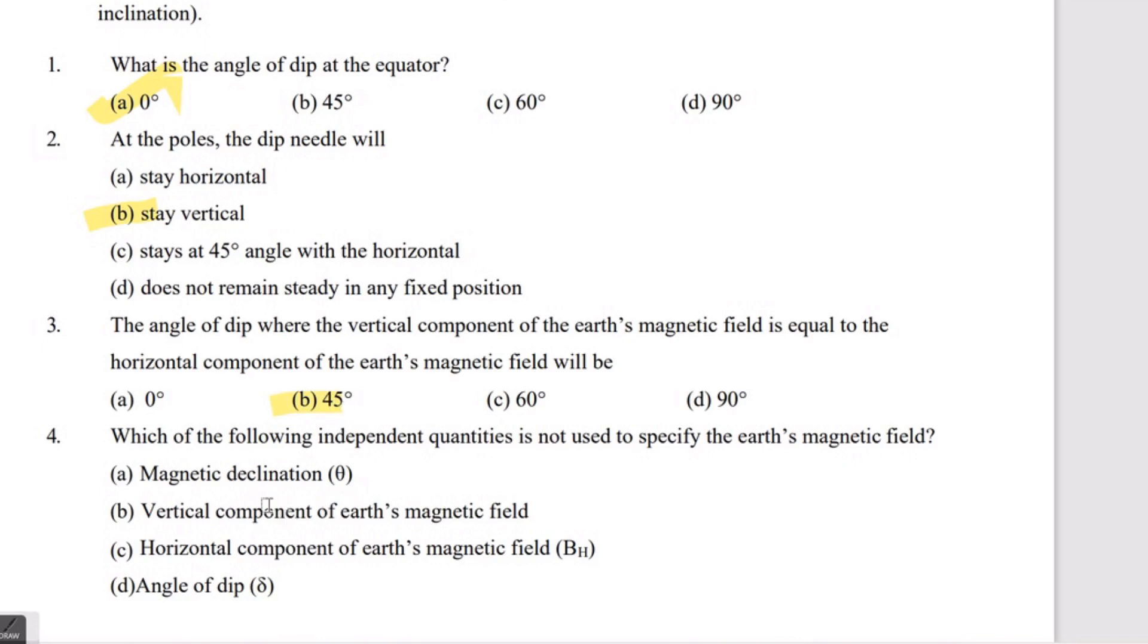And the last question: Which of the following independent quantities is not used to specify the Earth's magnetic field? The correct answer is vertical component of the Earth's magnetic field.